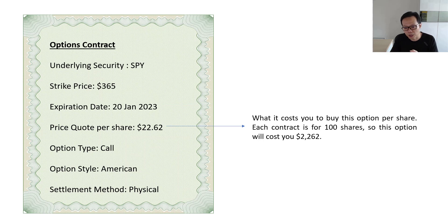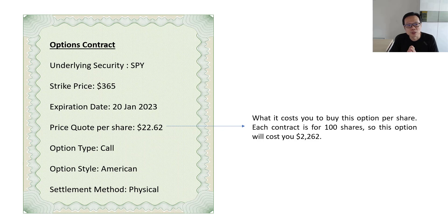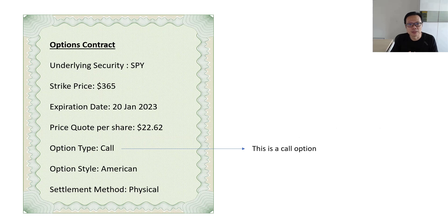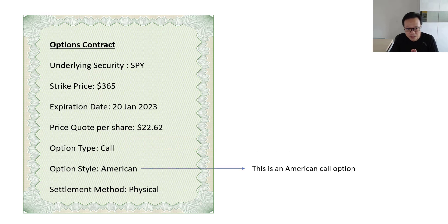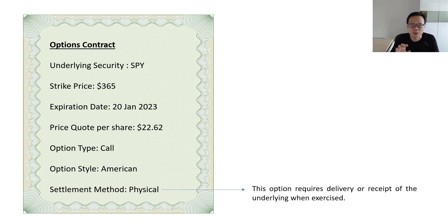We also have the quoted price of the option. Note that the standard for each option contract is for 100 shares of the underlying stock, but the prices quoted on the broker screen are usually for just one share. So to get what you need to pay, multiply the amount you see by 100. In this case the total cash to purchase one option contract on SPY is $2,262. This is a call option, giving you the right to buy SPY at the strike price when exercised. This is an American style option, giving you flexibility to exercise anytime up to expiry.